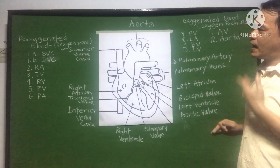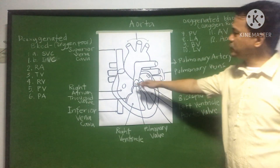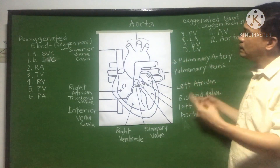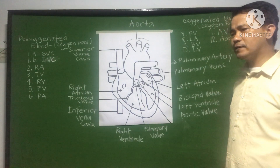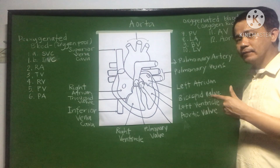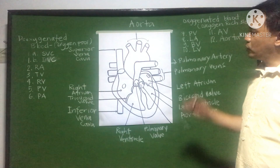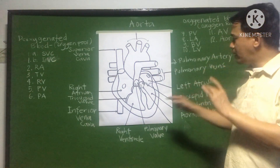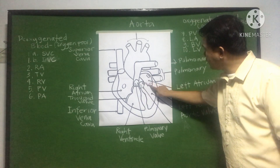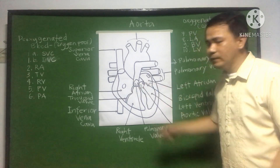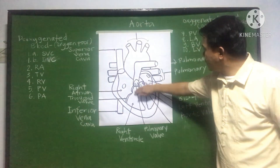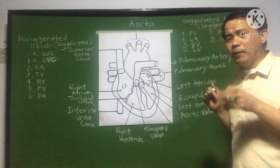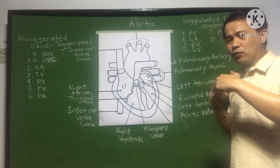So what are our memory tips? First, whether on the left or right side, the atrium always comes before the ventricle — just like in the alphabet, A comes before B. Atrium before ventricle. Second, between each atrium and ventricle, there are valves. The purpose of the valve is to prevent backflow of blood — so the blood doesn't go back after it's been pushed forward.